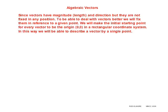Algebraic vectors. Since vectors have magnitude, length, and direction, but they are not fixed in any position, to be able to deal with vectors better, we will fix them in reference to a given point. We will make the initial starting point for every vector to be the origin (0,0) in a rectangular coordinate system. In this way, we'll be able to describe a vector by a single point.